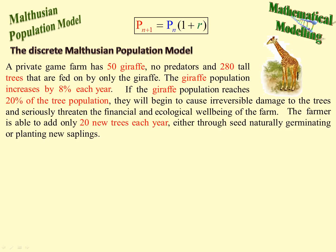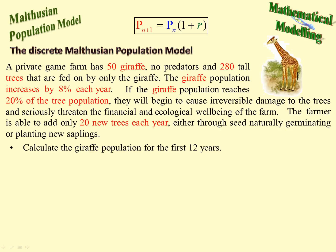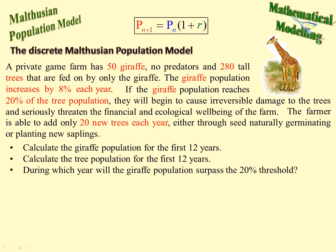To try to make up for this, the farmer adds new trees, but he can only add 20 new trees each year. We're asked to calculate the giraffe population for the first 12 years — this being discrete, we just calculate it year by year — and the same for the tree population. During which year will the giraffe population surpass the 20% threshold? We take 20% of the tree population every year and compare it to the giraffe population.